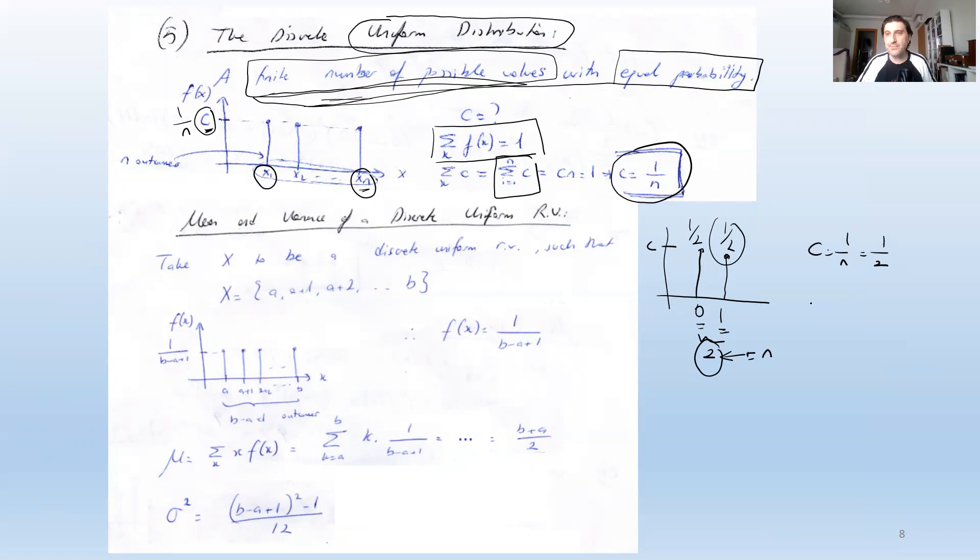For a coin toss, the values 0 and 1 each have probability 1/2, where n=2. For a dice, the values 1 through 6 are all equal, and since n=6, each has probability 1/6.